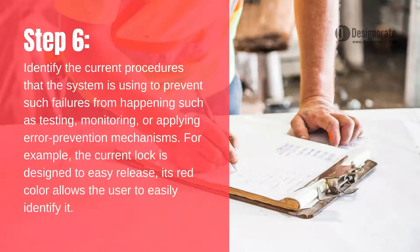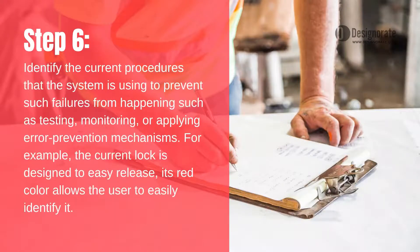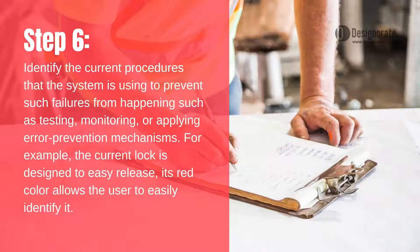Step 6: Identify the current procedures that the system is using to prevent such failures from happening, such as testing, monitoring, or applying error prevention mechanisms. For example, the current lock is designed for easy release, and its red color allows the user to easily identify it.